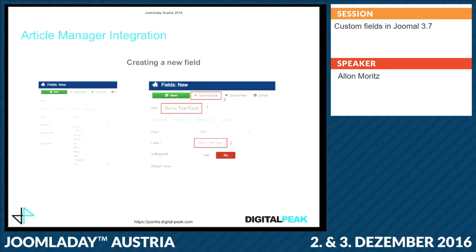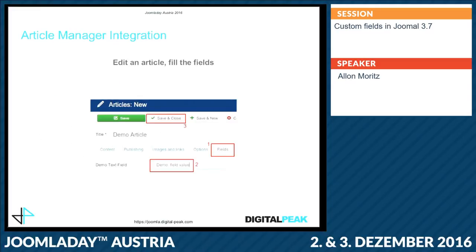After you create the field you can't change the type anymore. A label is also required but by default it is made from the title. You can change it so that the field has a different title in the list, and the label in the form can also be different. When you go to the article, if you don't assign a field to a group you will see a new tab called Fields, where you can add your custom value to the article.